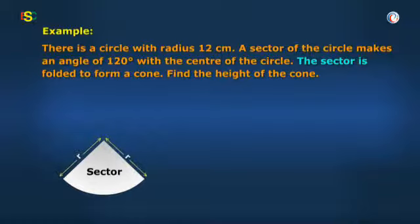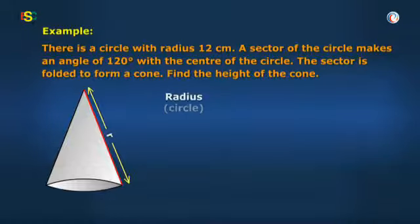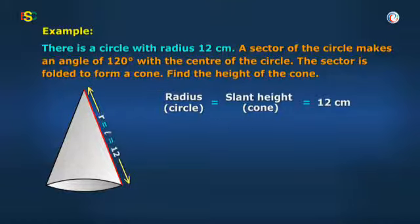When a sector of the circle is folded to form a cone, then radius of the circle becomes the slant height of the cone. And in the question, radius is given as 12 cm. So the slant height of the cone L must be 12 cm.